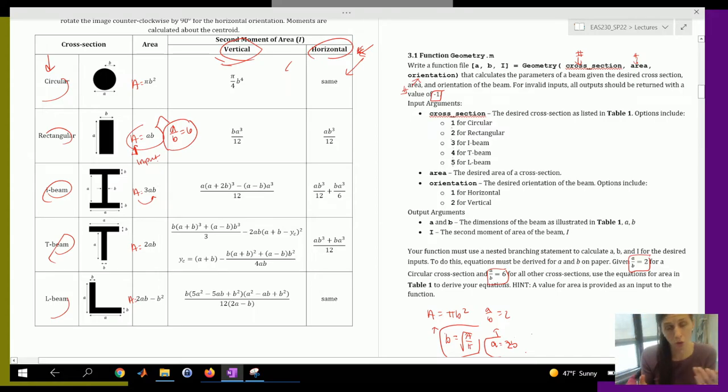And then you'll go ahead and have your branching statement that chooses, okay, given a circular cross section, this is what A is going to be. This is what B is calculated as. And then given your orientation, you can go ahead and calculate what it is for a vertical cross section or a horizontal cross section.